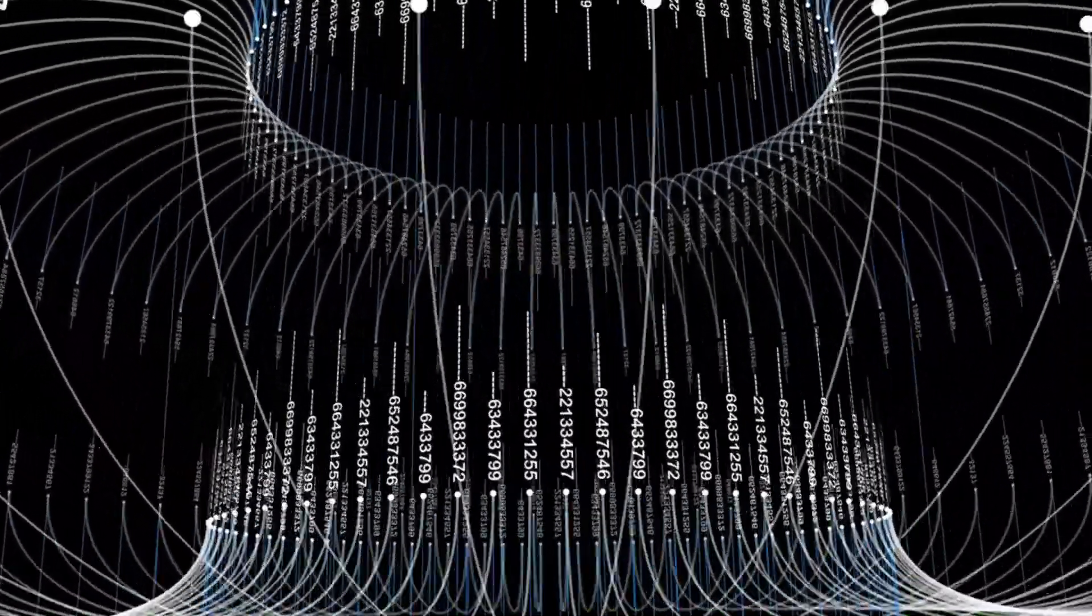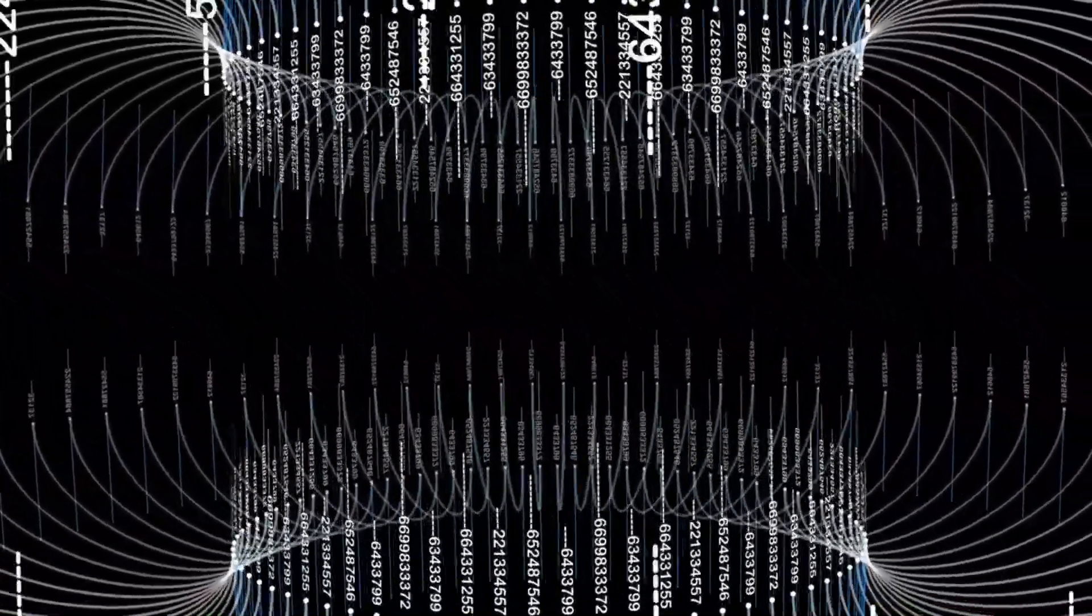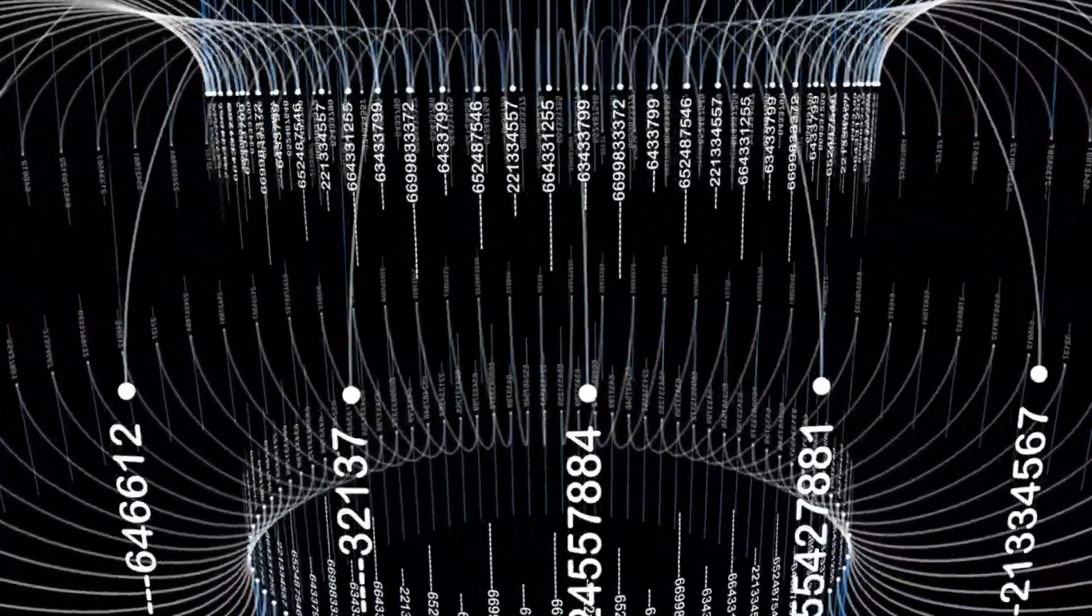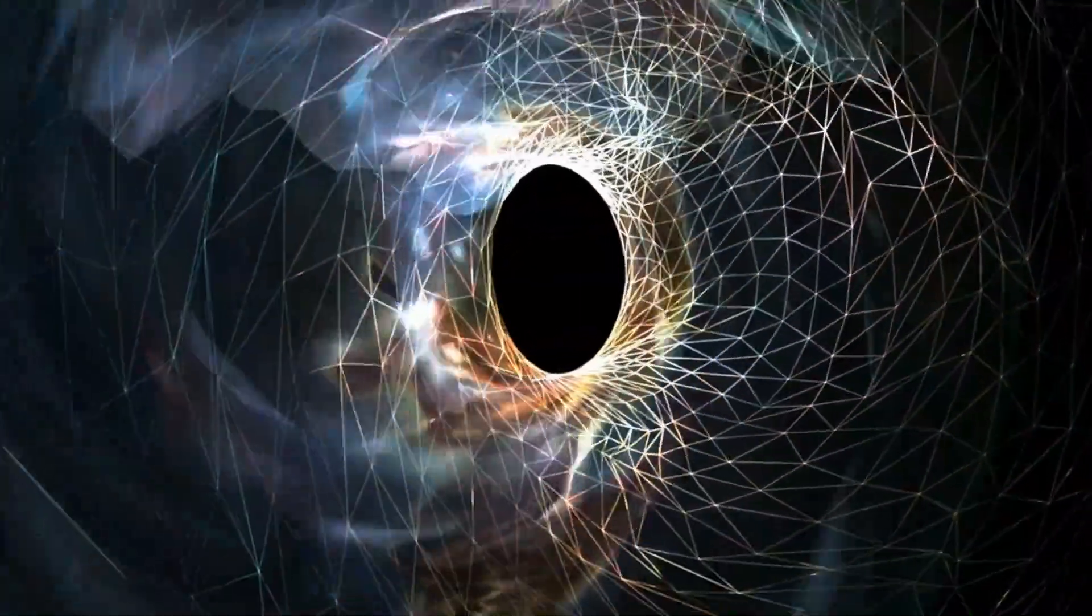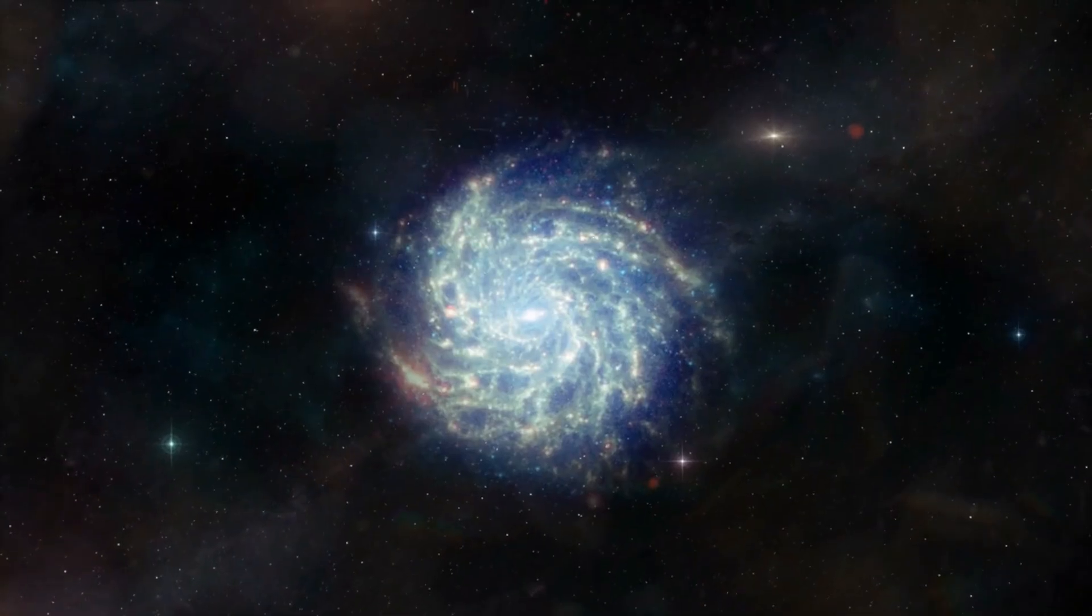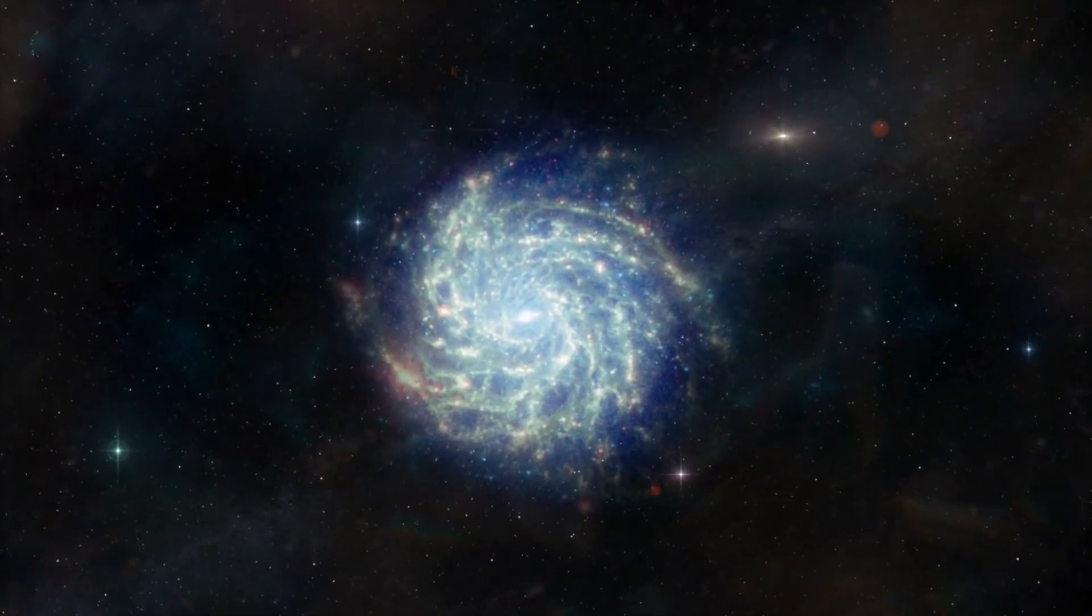And we're not talking about small fry here. We're talking about black holes with the mass of millions of suns, already lurking in the heart of these young galaxies just a few hundred million years after the Big Bang.